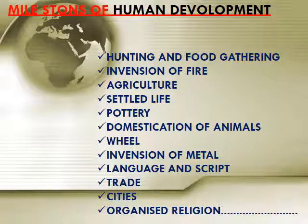The milestones of human development show it is not a story of sudden change but a long process. First we were hunters and food gatherers, then we invented fire, then agriculture, then settled life. We prepared pottery, domesticated animals, invented the wheel and metals, developed language and script, invented trade, cities, and organized religion. This is the very long path we actually achieved to become what we are today.